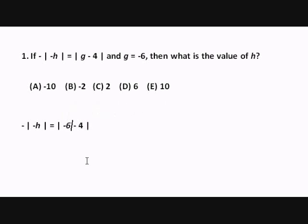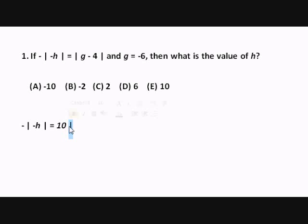And I'm going to continue simplifying inside this absolute value sign here. Negative 6 minus 4 gives us negative 10. And now I can go ahead and remove the absolute value sign, as long as I remember that once I remove them, everything that was negative inside becomes positive. So negative 10 becomes 10.